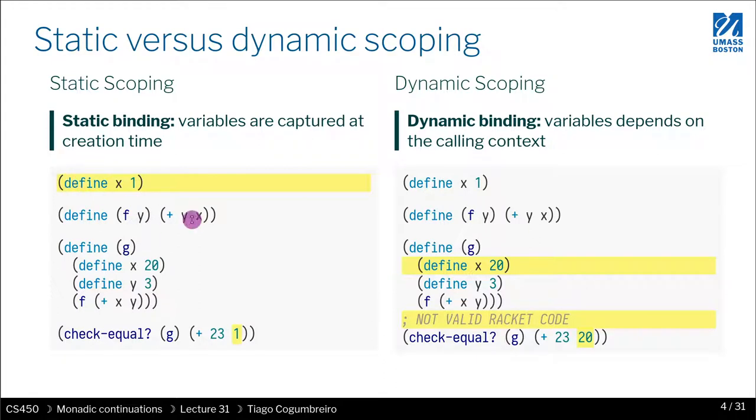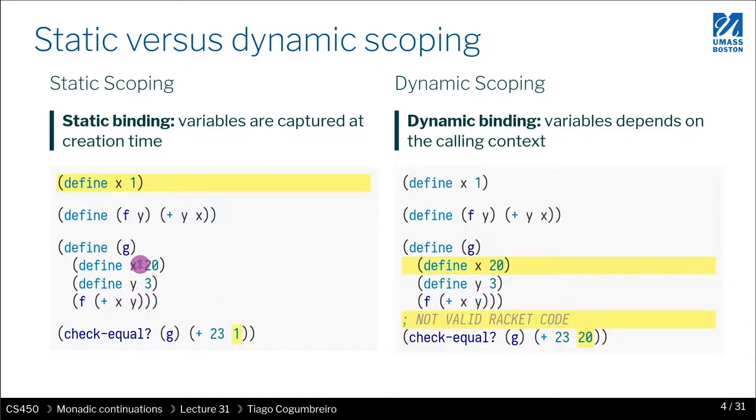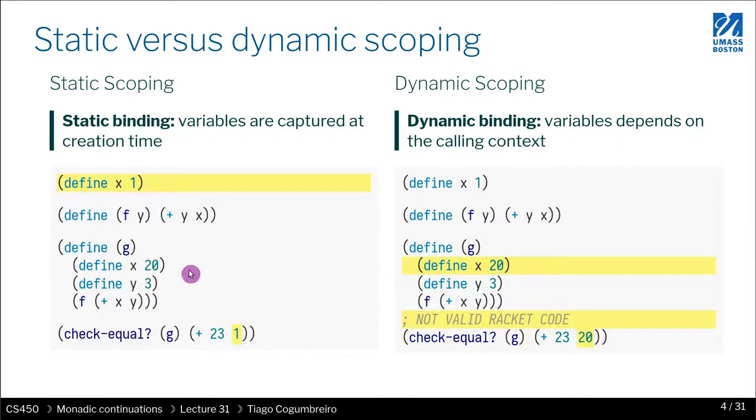So if your intuition is that this is the case, then you're assuming static binding or static scoping semantics of the program. What that means is that the variable always represents the closest enclosing definition of that variable. So x would be the closest enclosing one.